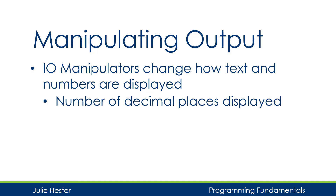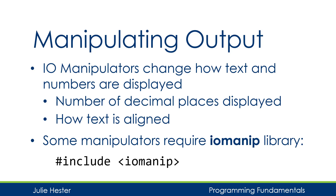For numbers we can use these to influence the number of decimal places that are displayed, or with text we can manipulate how the text is aligned. Some of these manipulators are built into our standard libraries, and some will require us to include the IO manip library. We add an additional header file by typing #include and then instead of iostream we put iomanip. This doesn't replace iostream — we'll need both header files, iostream and iomanip, to make this work.